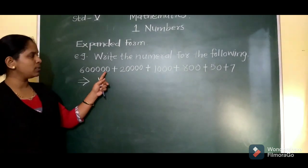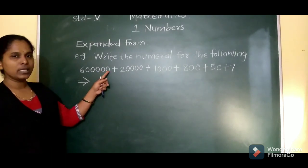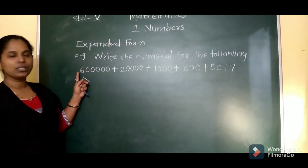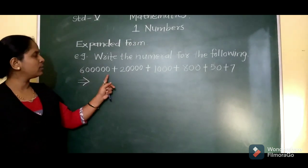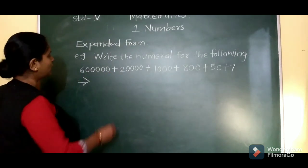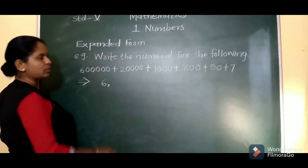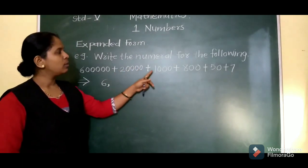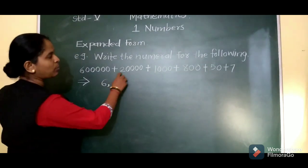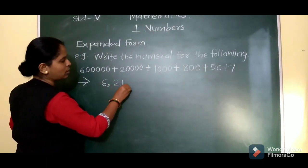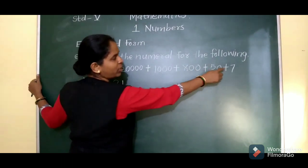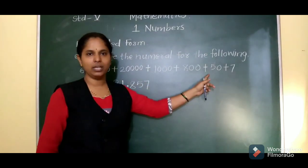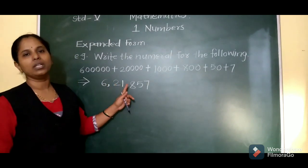Looking at the number: 1's, 10's, 100's, 1000's, 10,000's, and lakhs place — the digit at 10 lakhs place is 6, so we read 6 lakh. Then 20,000 plus 1,000 gives 21,000. And 800 and 57. So the numeral is 6,21,857.